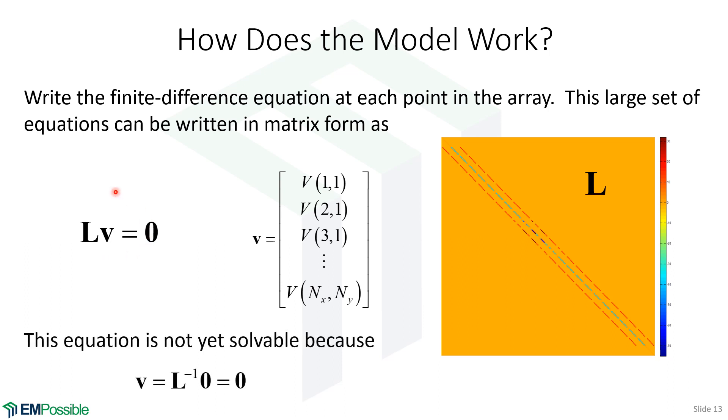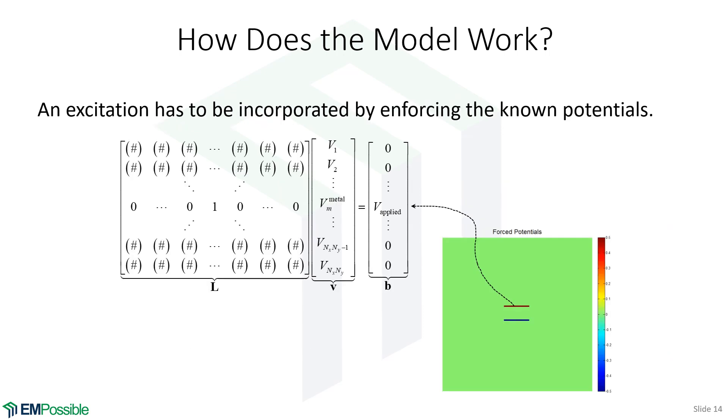Now, unfortunately, I can't solve this yet. If I try to solve this equation for V, essentially bring L over to the other side, so I have V equals L inverse times zero, well, anything multiplying a column vector of zero just gives me a column vector of zero. So it's a trivial answer. But the reason I can't find the solution is because I have not yet told this problem where I'm holding the potentials. Remember, there's that plus 0.5 on the top and this minus 0.5 on the bottom. I haven't told that matrix equation that information yet.